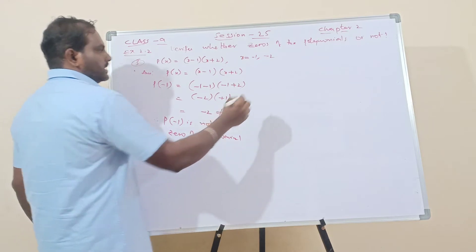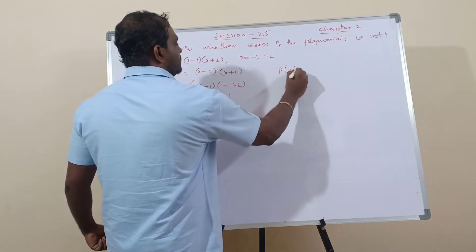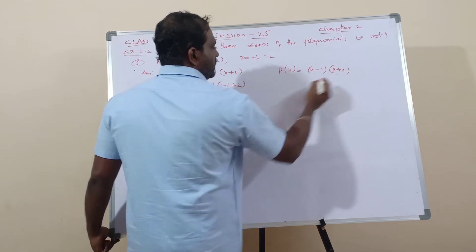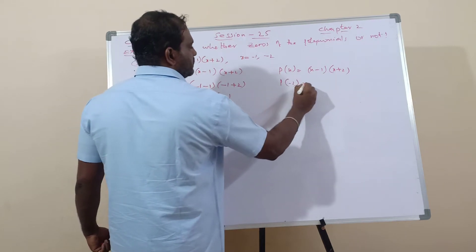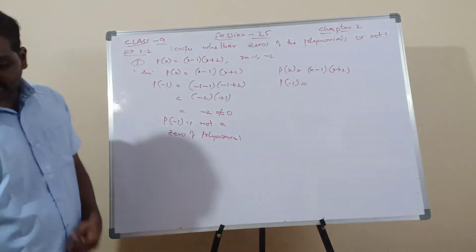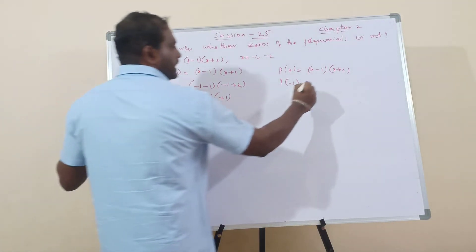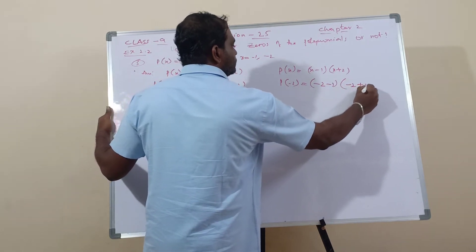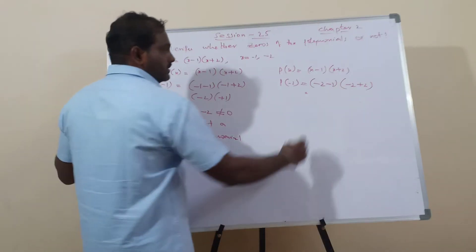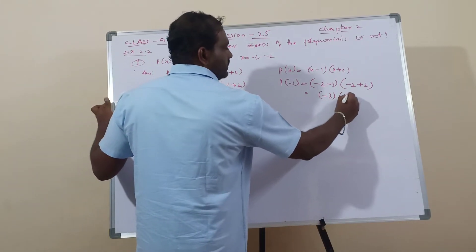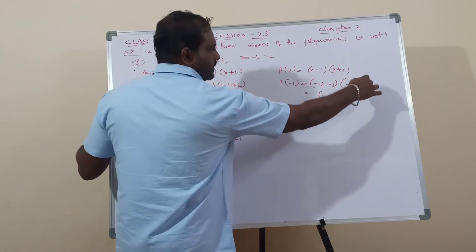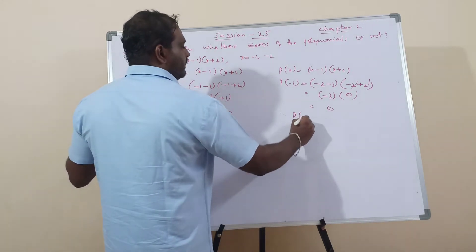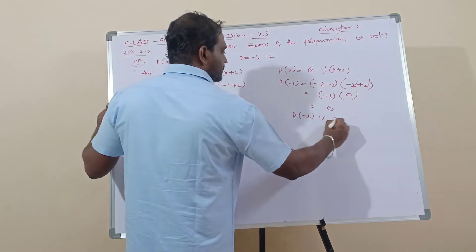Next, p of x equals x minus 1 into x plus 2. Now p of minus 2: wherever x is, I write minus 2. So we get minus 2 minus 1, into minus 2 plus 2. That is minus 3 into 0. Minus 2 and plus 2 cancel, giving 0. So minus 3 into 0 is 0. Therefore p of minus 2 is the zero of the polynomial.